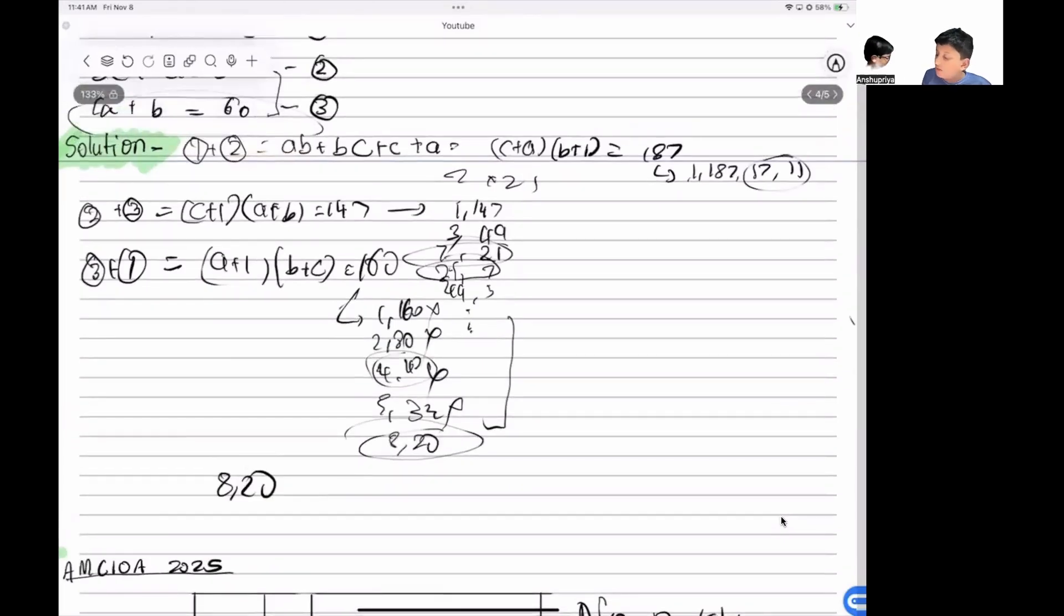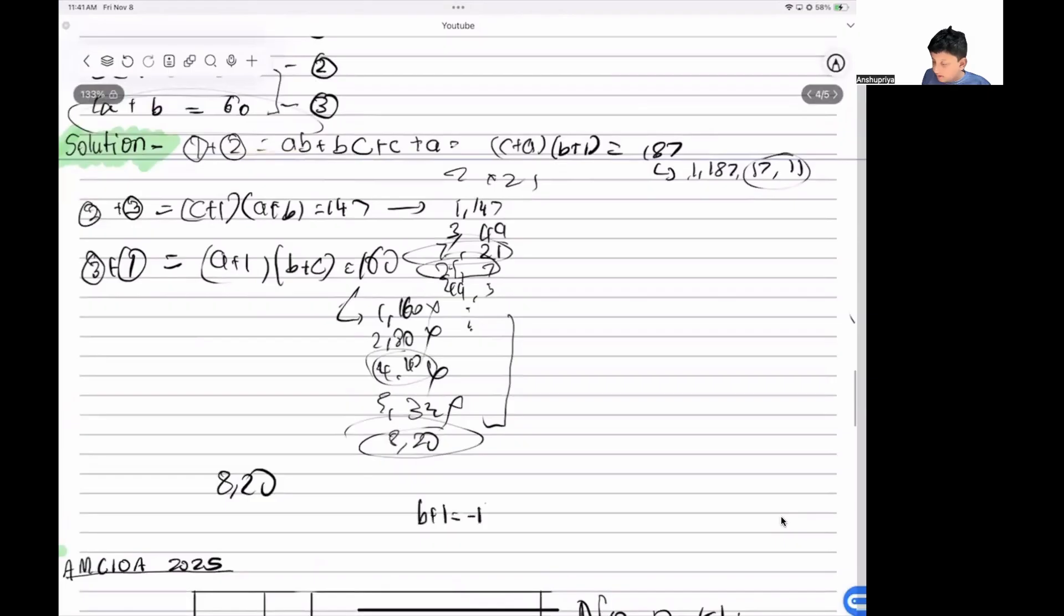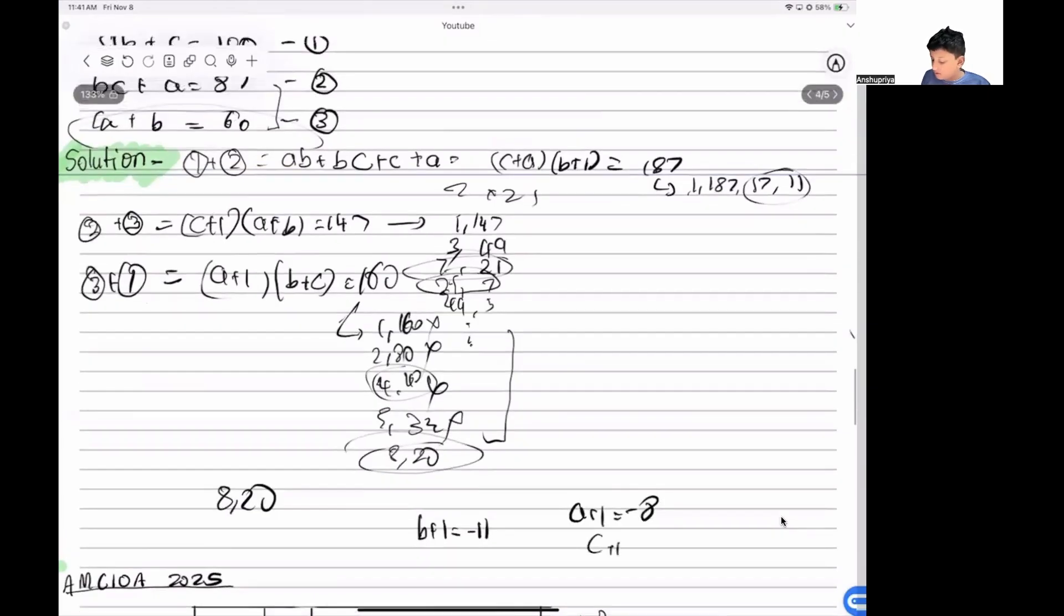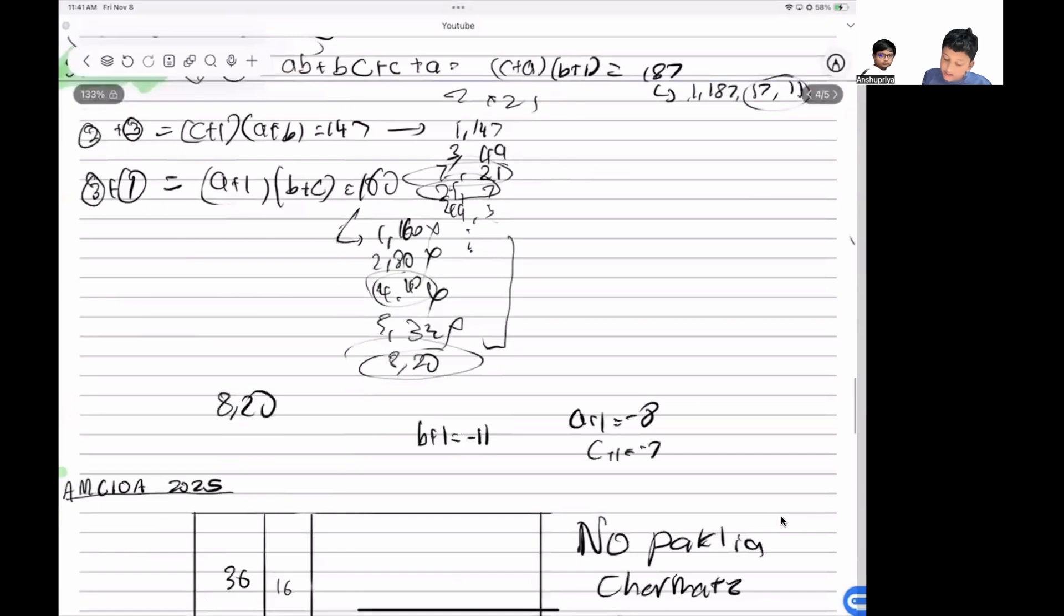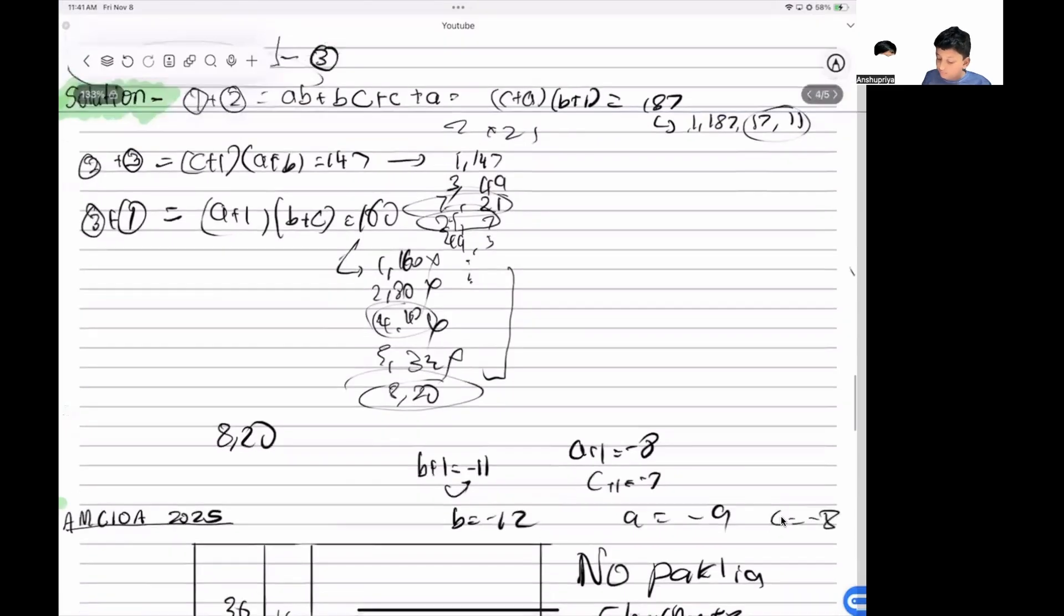So the answer will be b + 1 = -11, a + 1 = -8, and c + 1 = -7. Adding it up, you get b = -12, a = -9, c = -8.